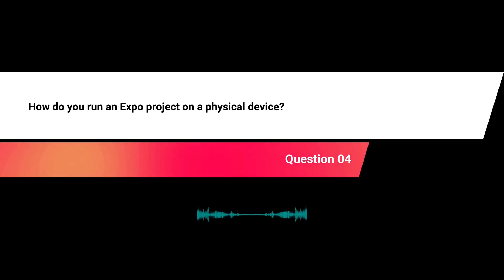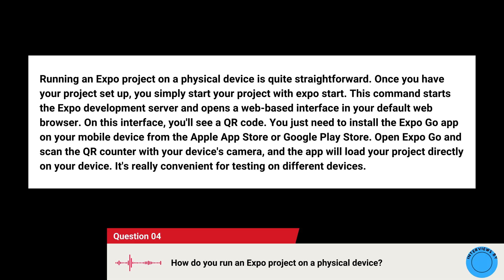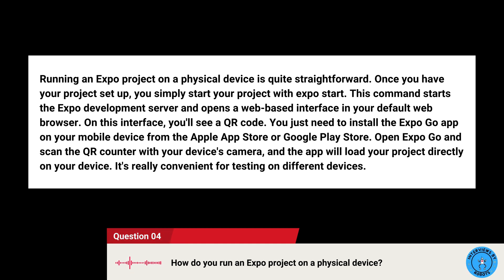How do you run an Expo project on a physical device? Running an Expo project on a physical device is quite straightforward. Once you have your project set up, you simply start your project with expo start. This command starts the Expo development server and opens a web-based interface in your default browser where you'll see a QR code. Install the Expo Go app on your mobile device from the App Store or Play Store, open Expo Go, scan the QR code, and the app will load your project directly on your device.